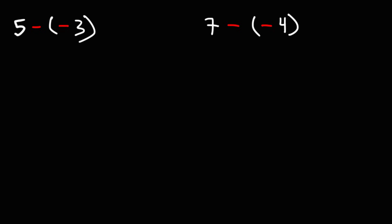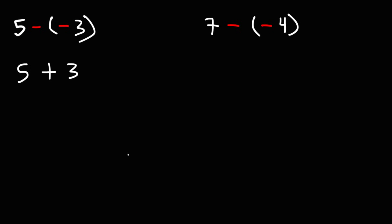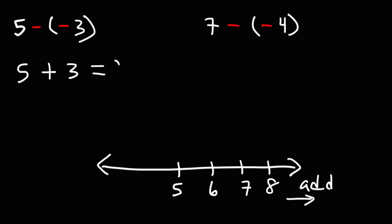So 5 minus negative 3. Notice that we have two negative signs next to each other. A negative times a negative is a positive, so this is equivalent to 5 plus 3. Using a number line, if we start from 5 and we add 3 to it, when adding you need to travel to the right. So we're going to travel three units to the right: 6, 7, 8. So 5 plus 3 is 8.